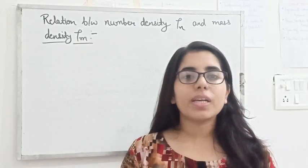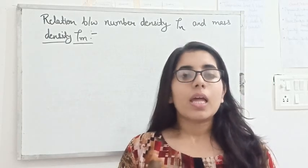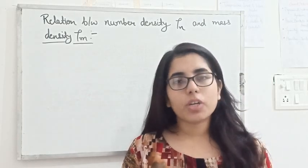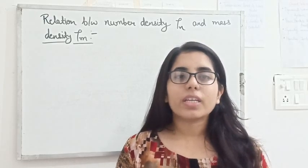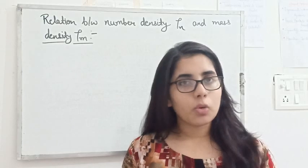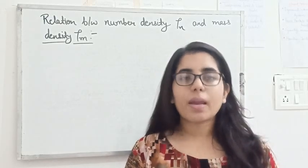What we mean by number density, that means the number of atoms per unit volume, and mass density, the mass of atoms per unit volume. So this formula will give us relation between the number density and mass density.